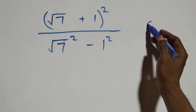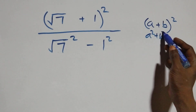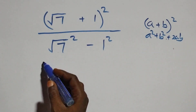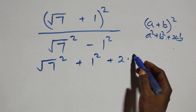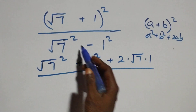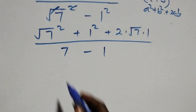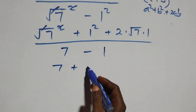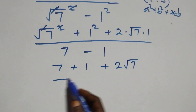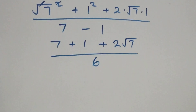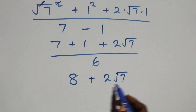Expanding the numerator using (a + b)² = a² + b² + 2ab: we get (√7)² + 1² + 2 times √7 times 1, divided by (√7)² − 1² = 7 − 1 = 6. This gives us 7 + 1 + 2√7, over 6.